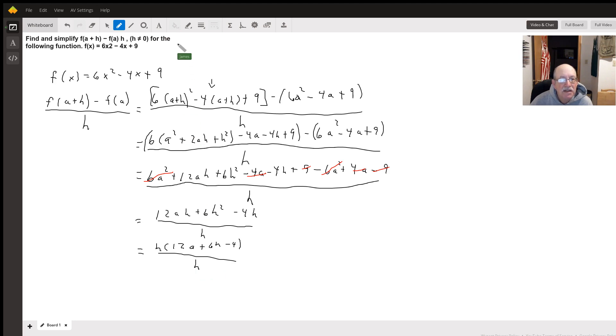Well, now I've got h divided by h, so those cancel out, and we are left with 12a plus 6h minus 4.